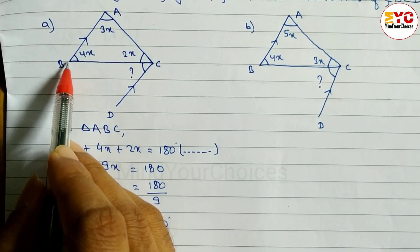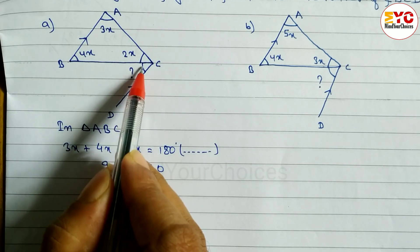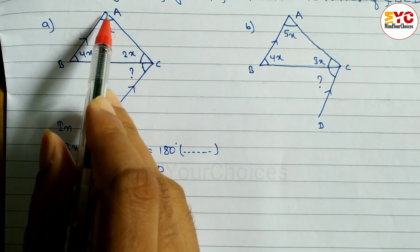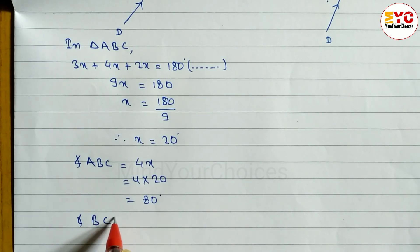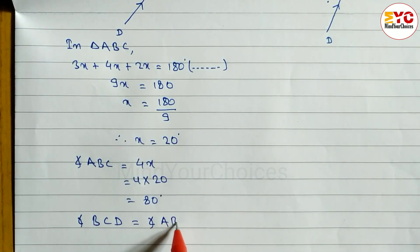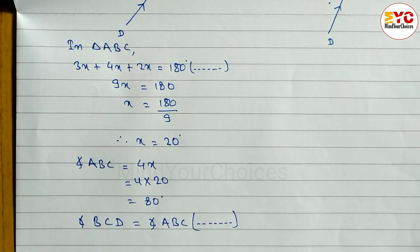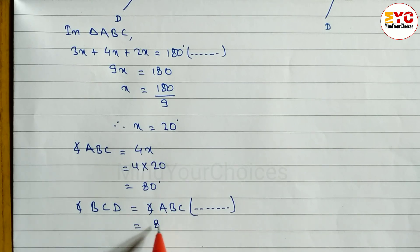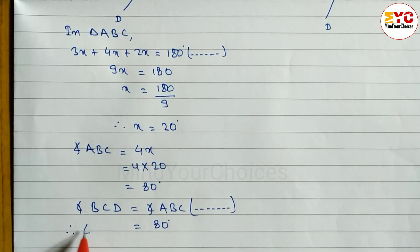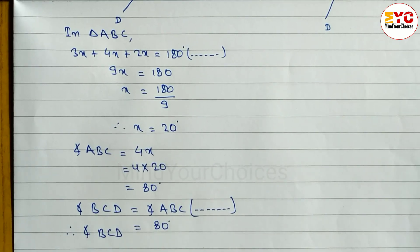So angle ABC = 4 × 20 = 80 degrees. Now, angle BCD and angle ABC are equal because they are alternate angles. Therefore, angle BCD = angle ABC = 80 degrees. That is the answer for question 7a.